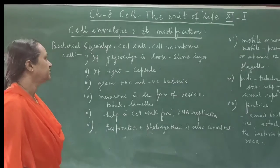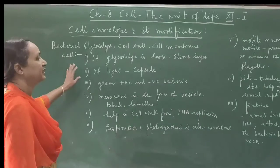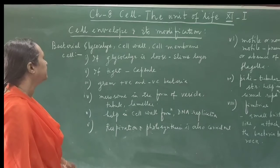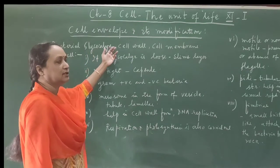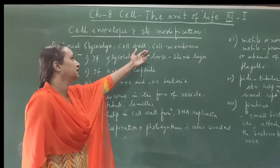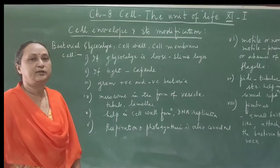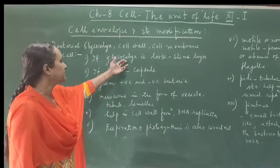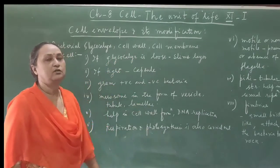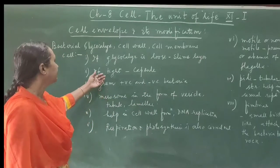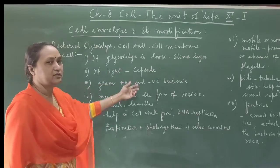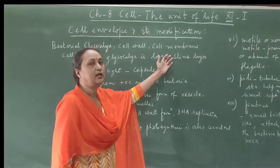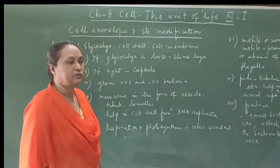Now we will discuss about different characters of bacteria. Bacteria is a prokaryote. In bacteria there are three distinct layers: the outermost one is called glycocalyx, then the second layer is the cell wall, and the innermost layer is the cell membrane. These layers are protective in function. If the glycocalyx is loose, it is called a slime layer; if it is tight and tough, it is called a capsule. Some bacteria have a slime layer and some have a capsule.